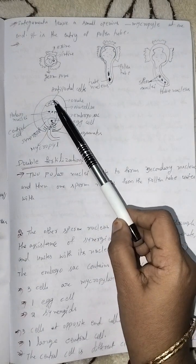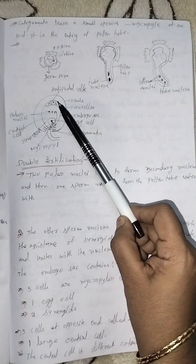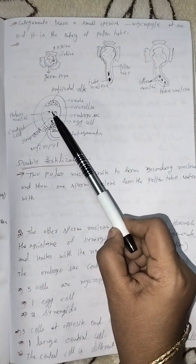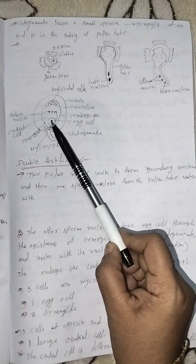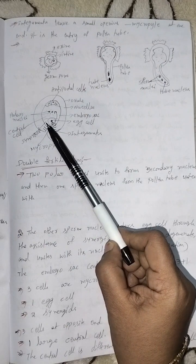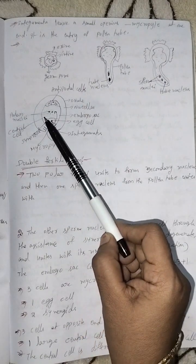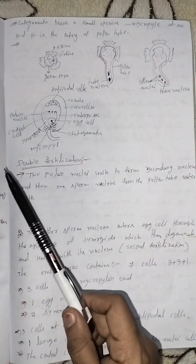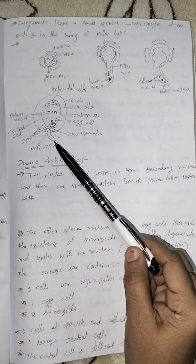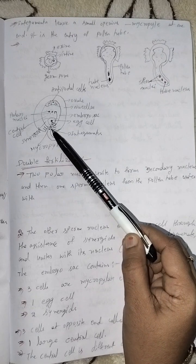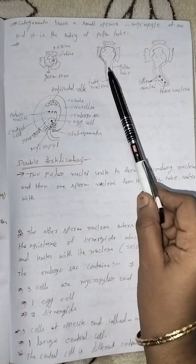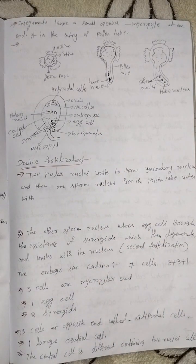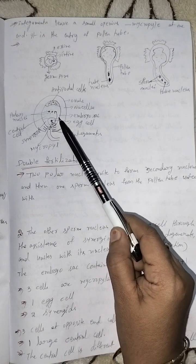Looking at the diagram: this is the ovary and this is the embryo sac. These three cells are antipodal cells, these are polar nuclei, this is the egg cell, and here are the synergids. This central cell contains the polar nuclei. This small hole in the ovule is called the micropyle, through which the pollen tube enters.